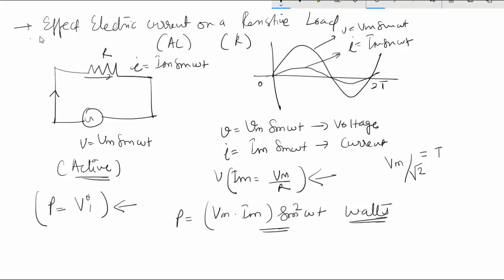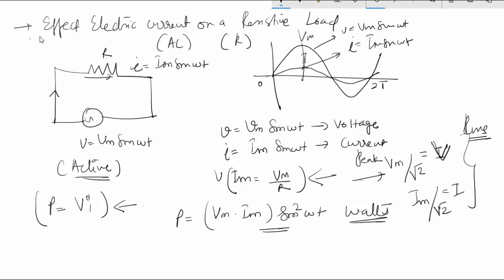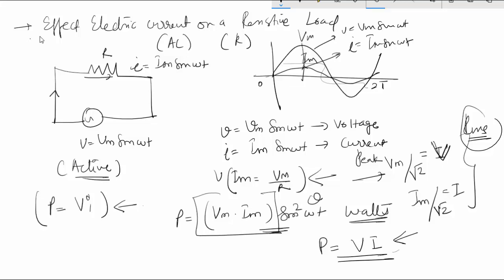Vm divided by root 2 equals V (RMS) and Im divided by root 2 equals I (RMS). These are known as the RMS or root mean square values, while Vm and Im are the peak values. The power can be given as VI in RMS values, or directly as Vm Im sine omega t if you know the phase difference between voltage and current at an instantaneous time.